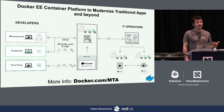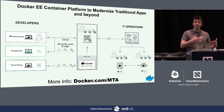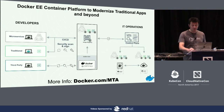One of the most common use cases we see enterprises use Docker for is to modernize traditional applications. Initially, when containers appeared four years ago, lots of people were using Docker for CI/CD or microservice-type applications. Nowadays, the trend is to take old .NET or Java applications running in VMs or on bare metal, containerize them, and then use Docker EE to set up a full CI/CD workflow and run them on different types of infrastructure.